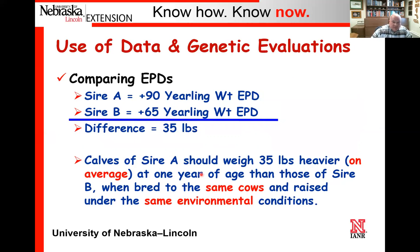EPDs are a comparative value. For example, if Sire A has a plus 90 yearling weight EPD and Sire B has a plus 65 yearling weight EPD, we simply take the difference: 35 pounds. That means the calves of Sire A should weigh 35 pounds heavier on average at one year of age than those of Sire B when bred to the same cows and raised under the same environmental conditions.